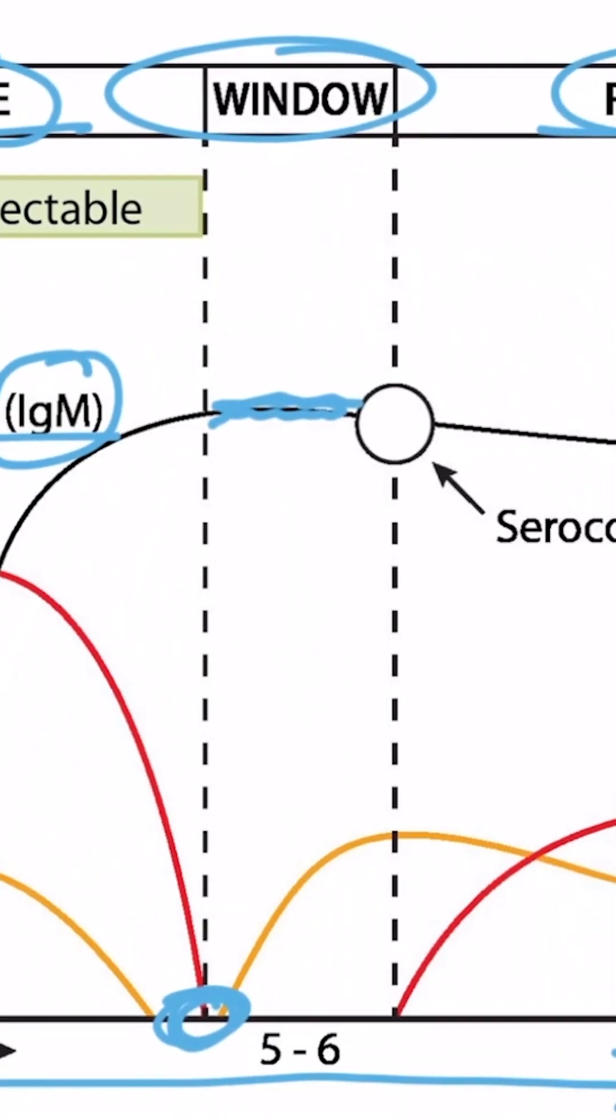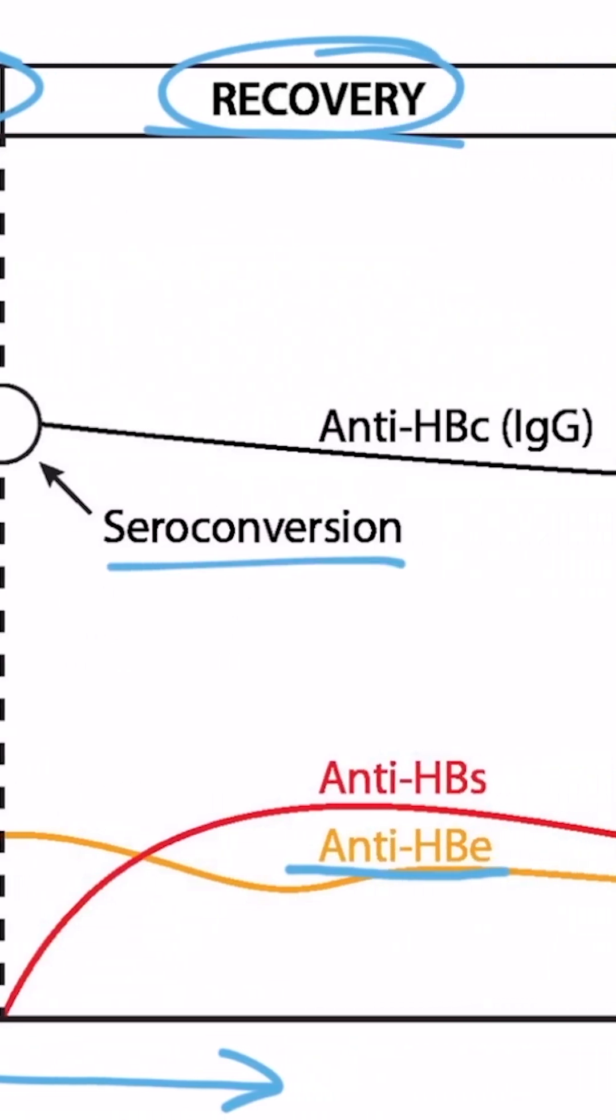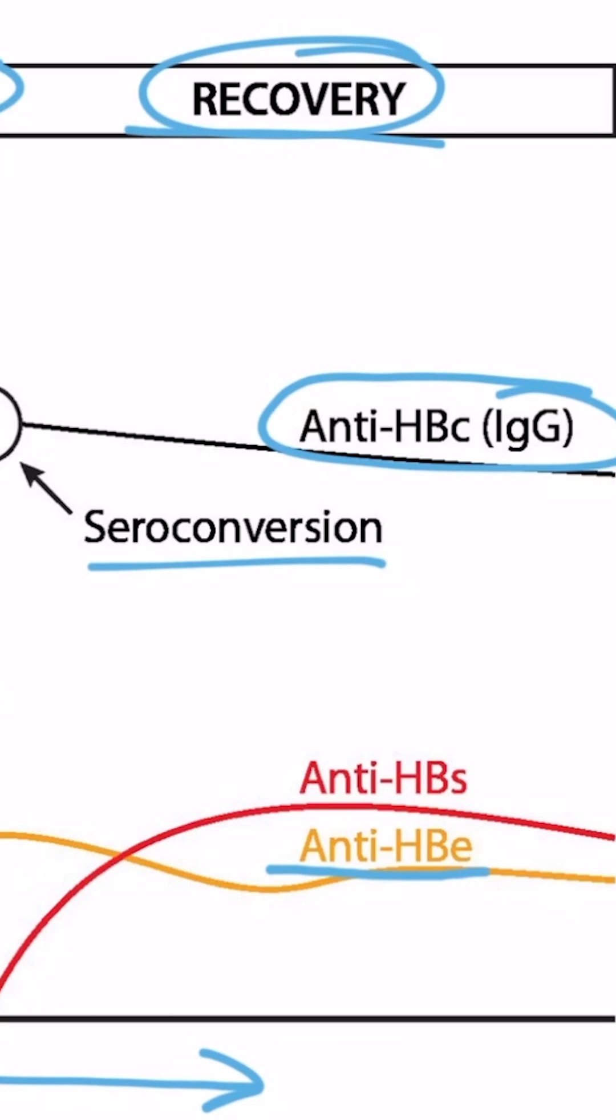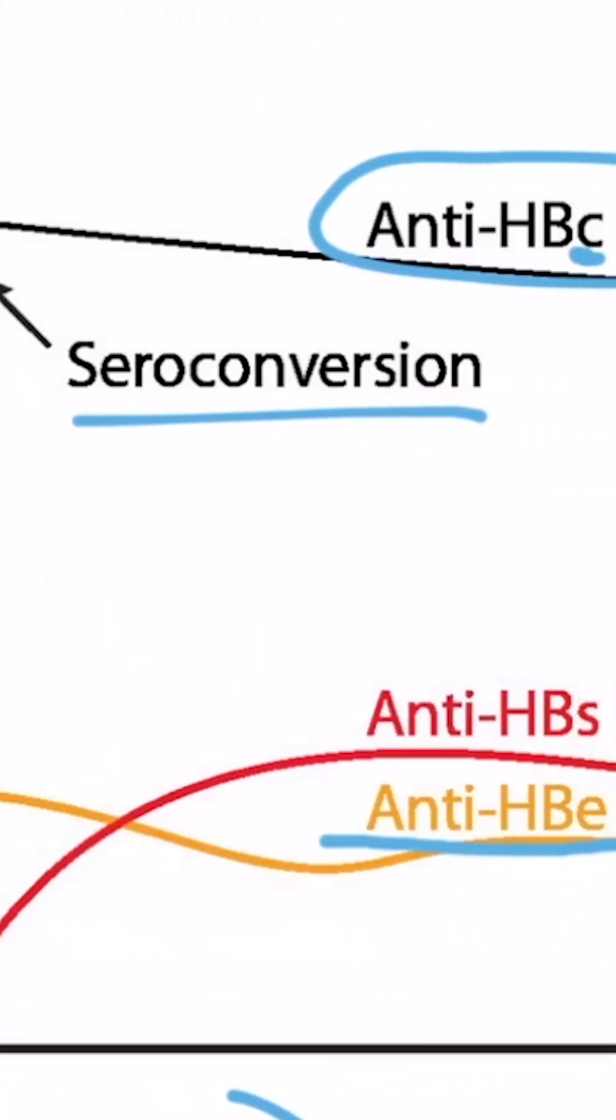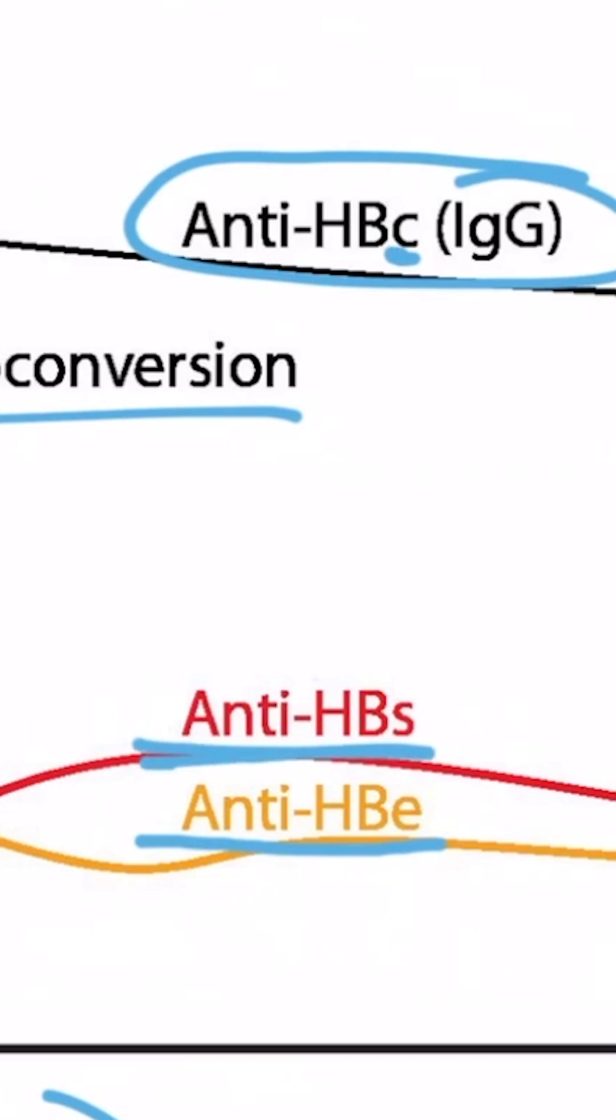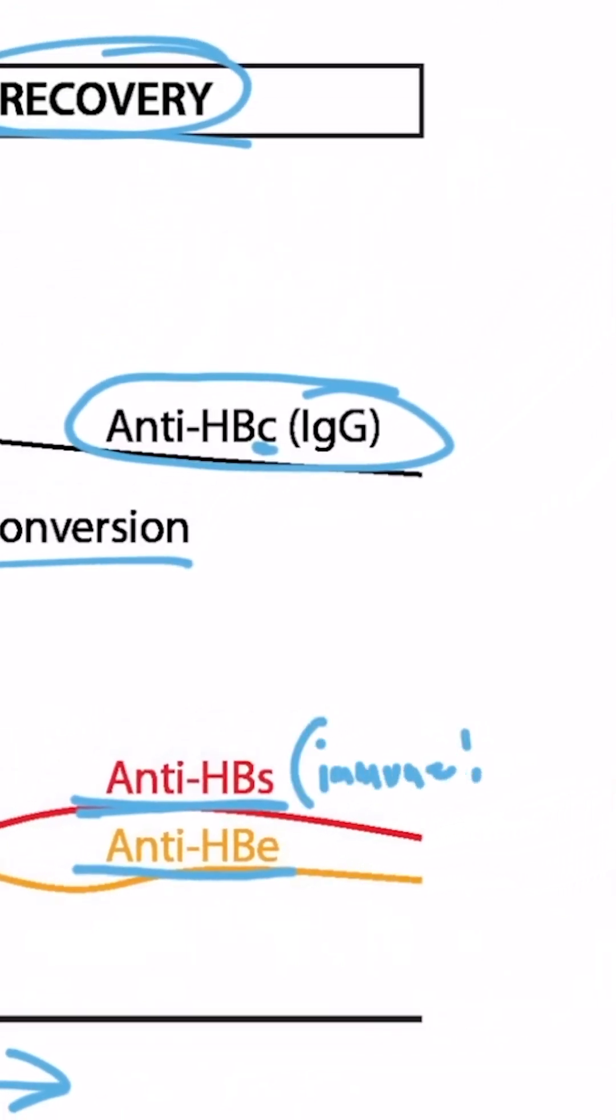Near the end of the window phase, we will see two things occur. First, there's seroconversion, and we will see IgG antibodies present. And these, of course, are against the core antigen. Second, antibodies against the surface will develop, depicted by this red line. And these are the antibodies you really want because they indicate immunity, as we discussed on the table before.